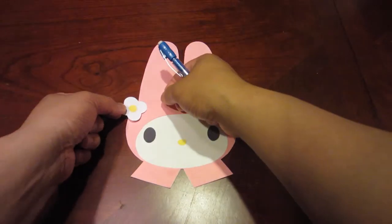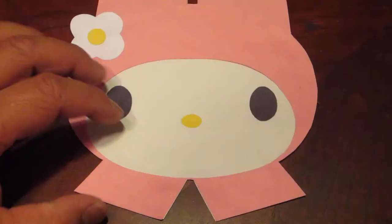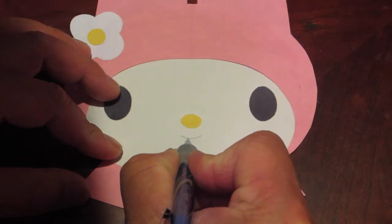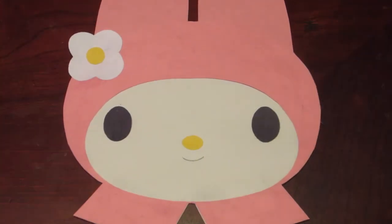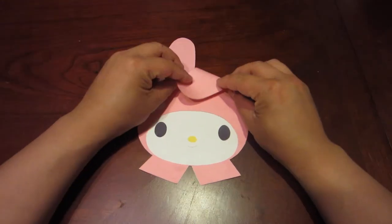Next, the flower. Take your pencil and draw a small smile under the nose like this. Now bend one ear down at an angle.